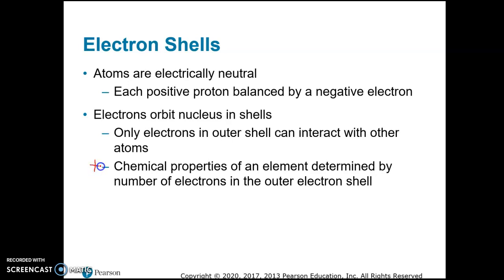The number of electrons that are in the outer shell are the ones that determine, for example, which elements a particular element will combine with to form compounds. So it's the electrons in the outer electron shell that are the most important in determining the chemical properties of that element.